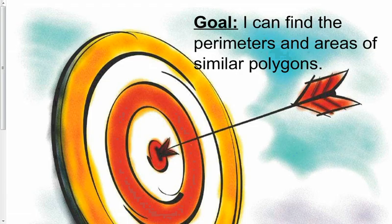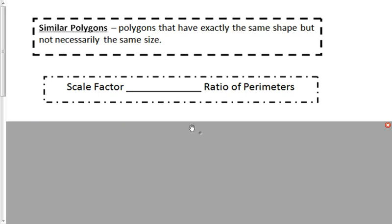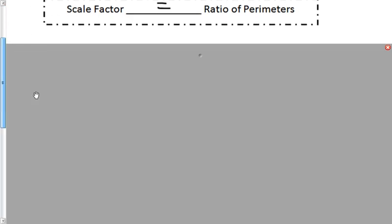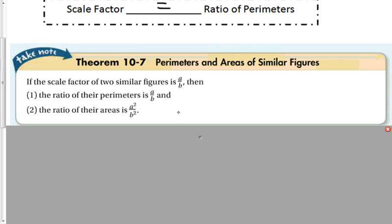Our goal is to find perimeters and areas of similar figures. Similar polygons have exactly the same shape but not necessarily the same size. The scale factor equals the ratio of the perimeters — if the scale factor is A to B, then the ratio of their perimeters is also A to B. But to find the ratio of the areas, you square it: A squared to B squared. So if the scale factor is 2 to 1, the area ratio is 4 to 1; if it's 3 to 1, the area ratio is 9 to 1.